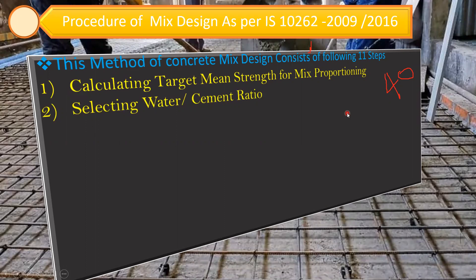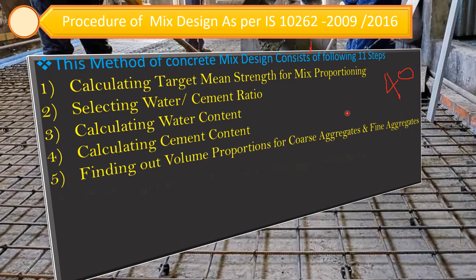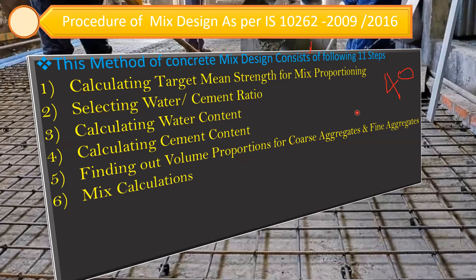Based on the water-cement ratio, we get the water content. Then, from the water-cement ratio and water content, we get the cement content — for example, if the ratio is 0.4, cross-multiplying gives water and cement content. Next is finding the volume proportion for coarse and fine aggregate, then performing all the mix calculations.